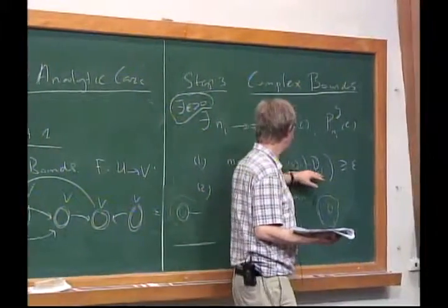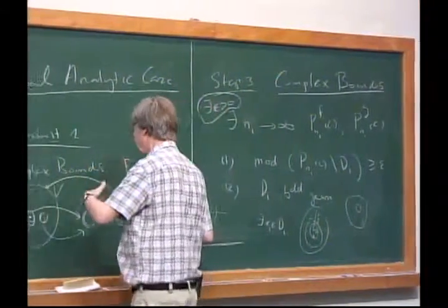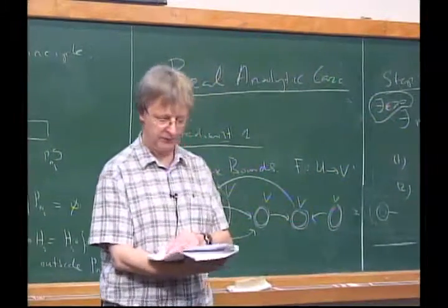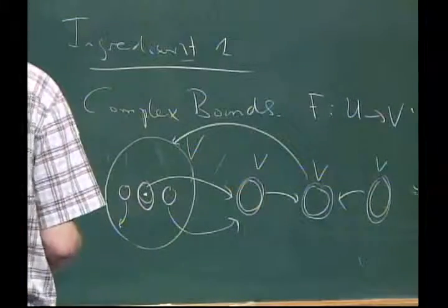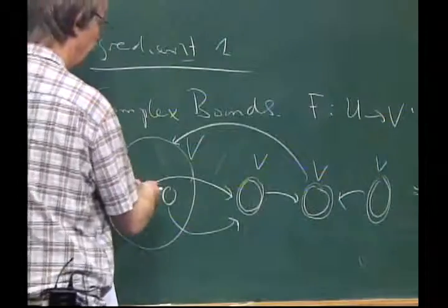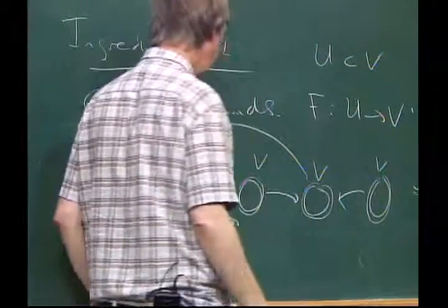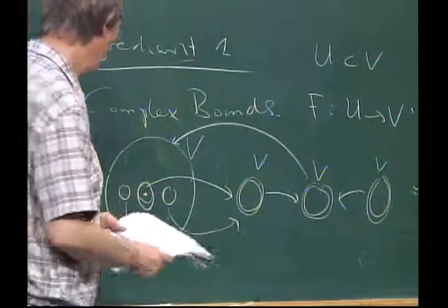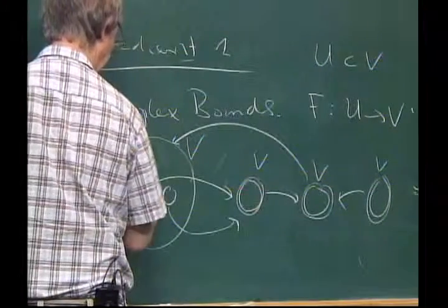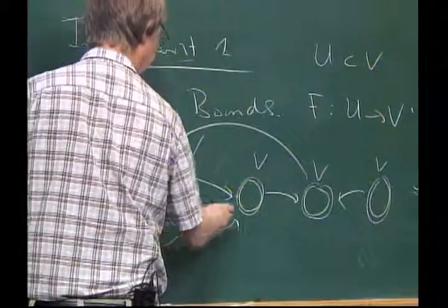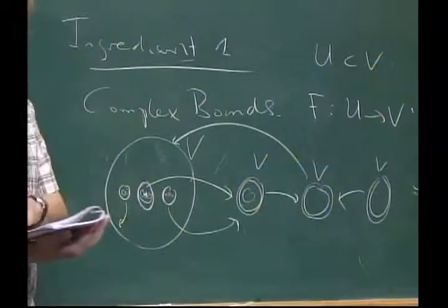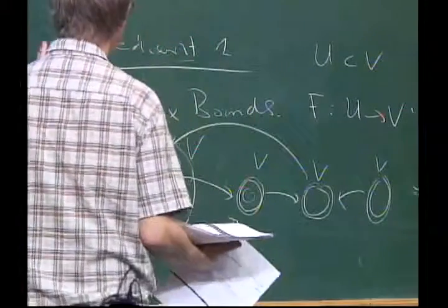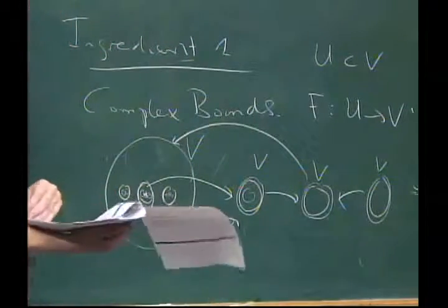In the first instance you only have modulus bounds, but it's a bootstrap method: once you have some control you can bootstrap to the full description you need. Given this, you also have a puzzle partition, because U is a subset of V, and taking inverses again gives you partitions. So you get a partition of the complex plane just as before. This is the first ingredient, and this is what Sophia will be talking about on Friday.